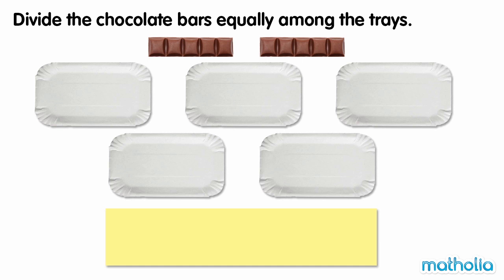Divide the chocolate bars equally among the trays. There are two chocolate bars and five trays. We need to find two divide five.